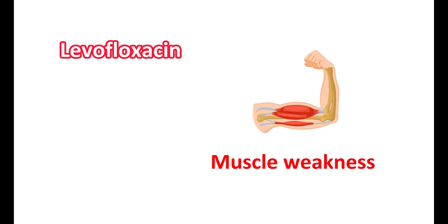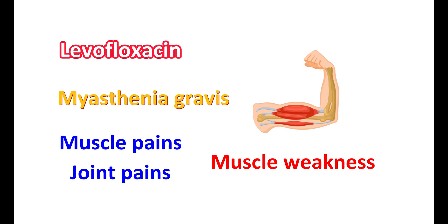Another important effect of this medication is on the muscle. This medication can produce muscle weakness. That's why in people with myasthenia gravis, this medication can further increase the muscle weakness and can induce severe muscle pains and joint pains. That's why in people with the history of myasthenia gravis.